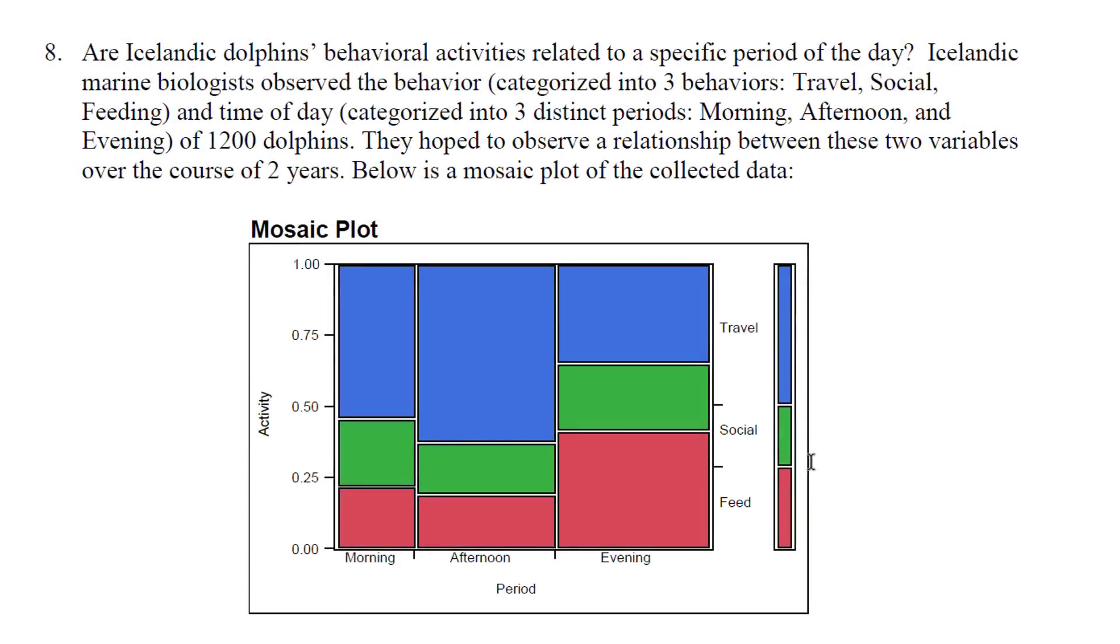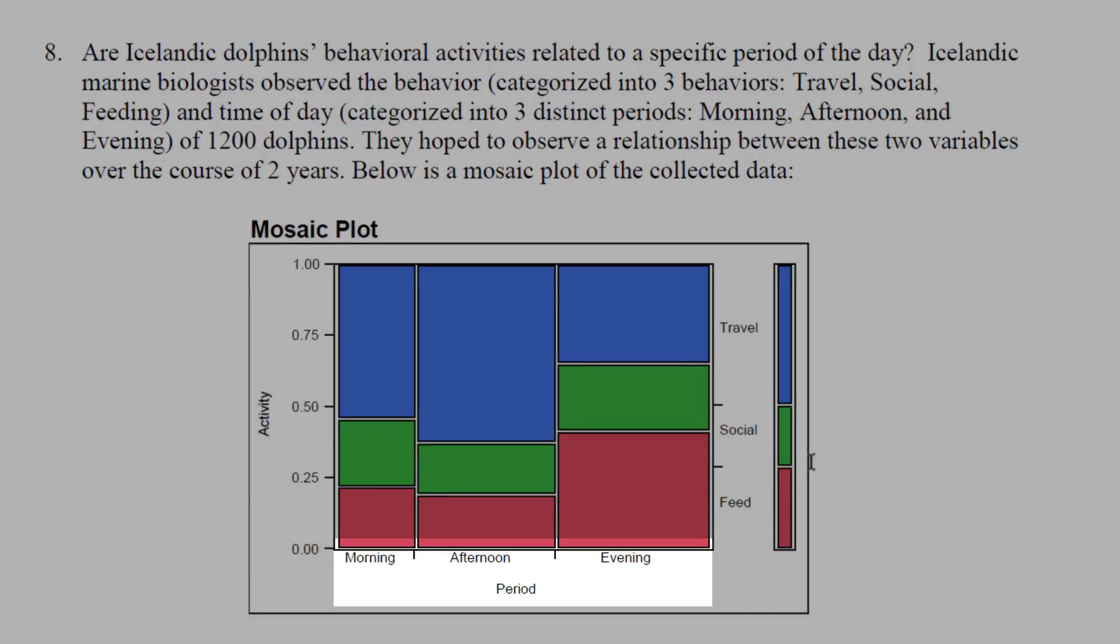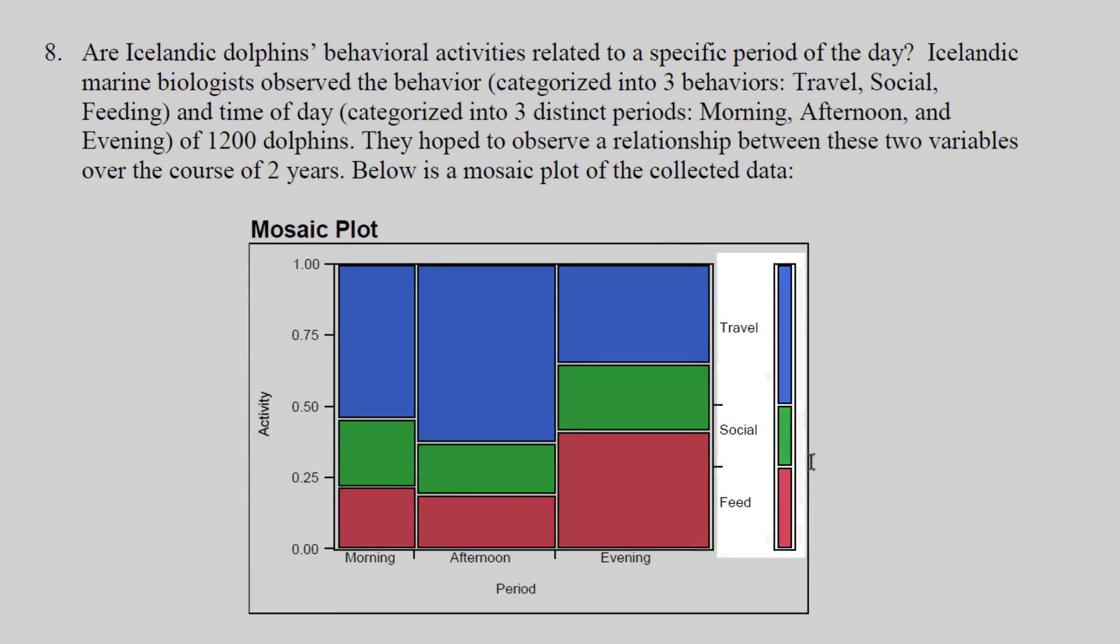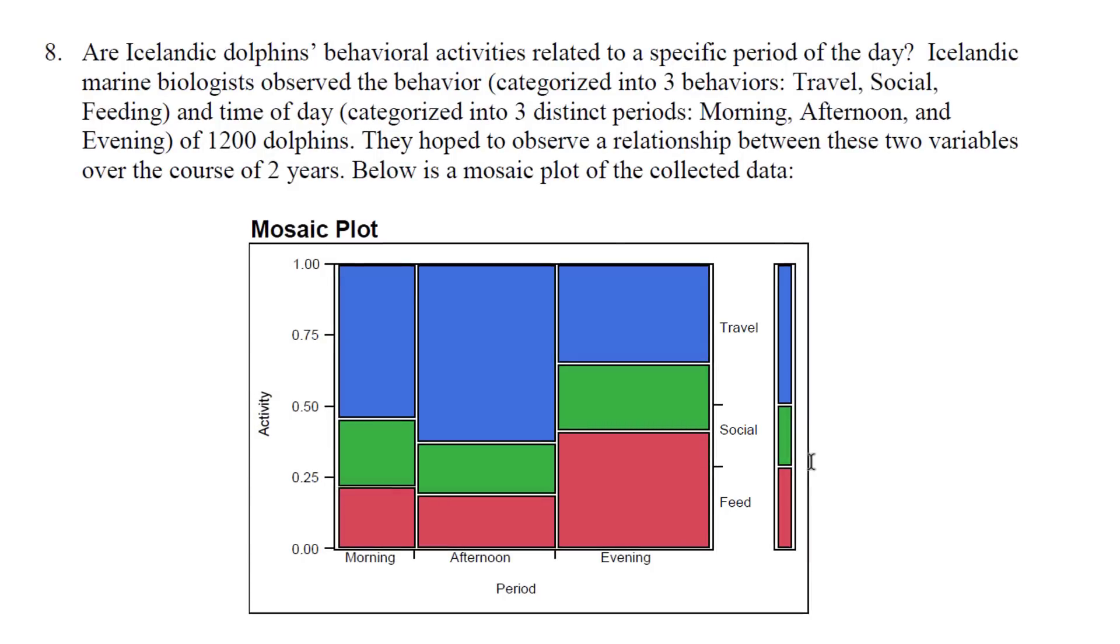Question number eight covers mosaic plots and we're looking at the behavior of dolphins over different periods of the day. This is categorical data—period would be morning, afternoon, or evening, and their behavior or activity would be feeding, social, or travel. So let's go ahead and look at this data and see what we can figure out.